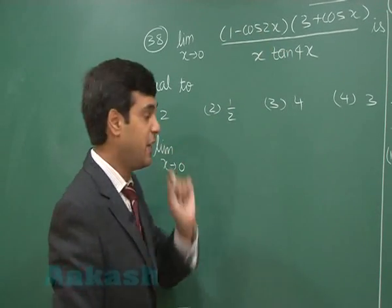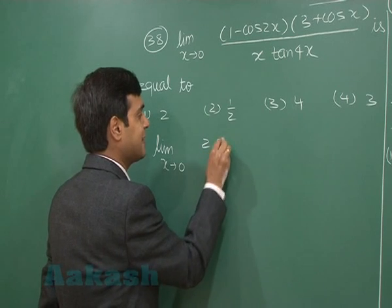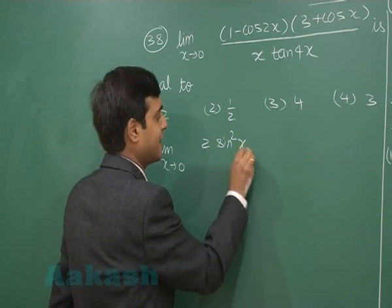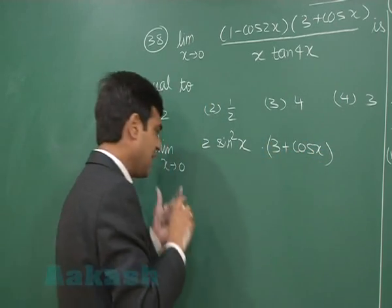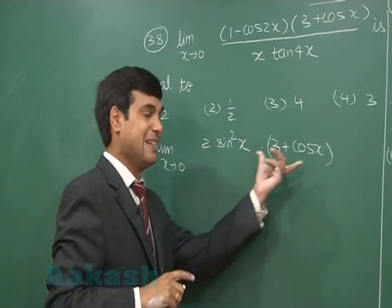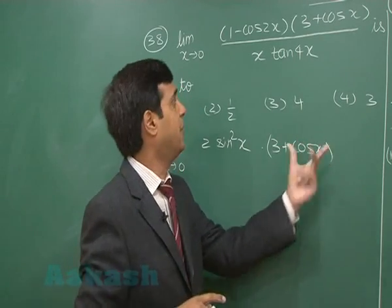1 minus cos 2x can be written as 2 sin square x. Now, 3 plus cos x, on applying limit x approaching 0, is not creating any trouble, so no need to disturb it.